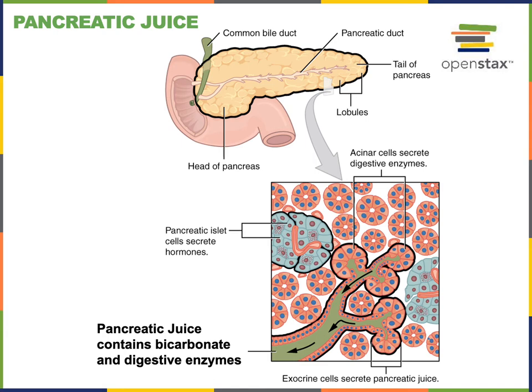Pancreatic juice also contains digestive enzymes. There are enzymes specific for the digestion of carbohydrates known as pancreatic amylase. There are also enzymes specific for the digestion of triglycerides, which are known as pancreatic lipase. And there is a variety of pancreatic proteases, enzymes that are important for digesting proteins.